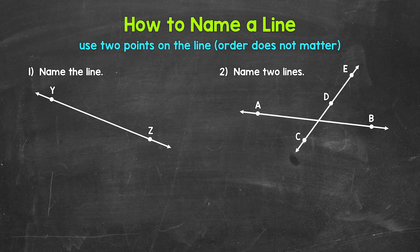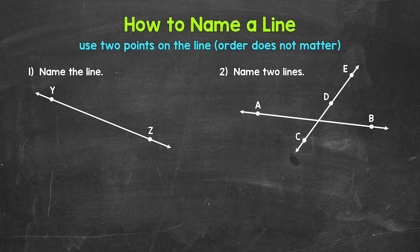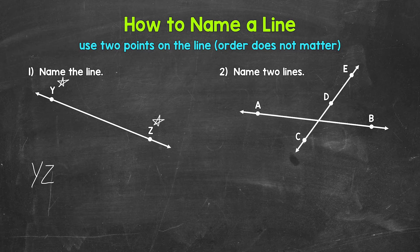Let's jump into how to name a line. Remember, a line goes on forever in both directions — it extends infinitely in both directions. We can name a line by using two points on the line. For example, in number one, we have point Y and point Z on that line. So all we need to do is write the points — Y and Z — using capital letters, and then put the symbol for a line above. Those arrows show us that we have a line.